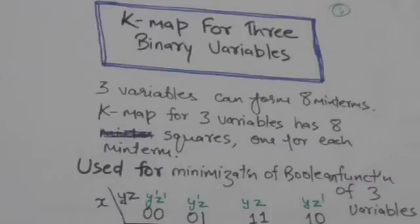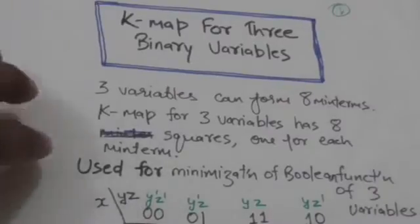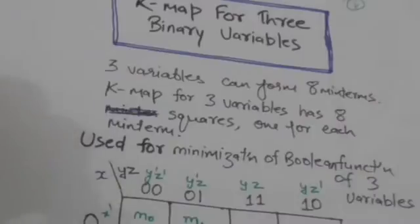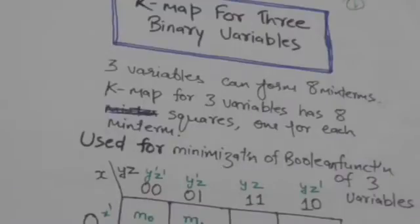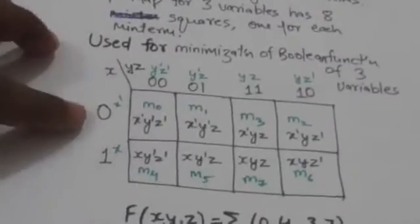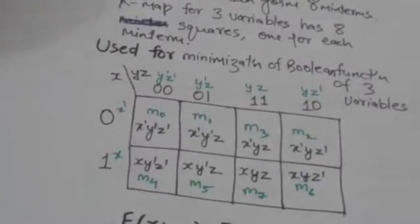Hello friends, welcome back. In this tutorial we will study about K-map for three variables. K-map for three variables is used for minimization of boolean functions of three variables. We know that three variables can form eight min terms, so a K-map for three variables has eight squares — one for each min term.